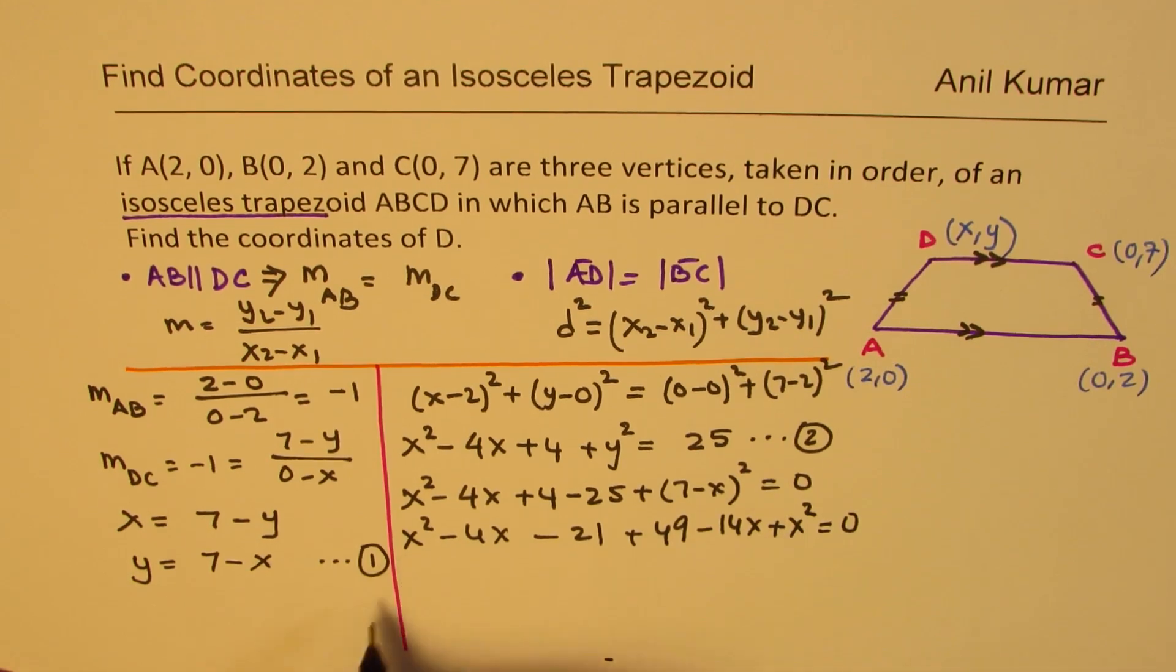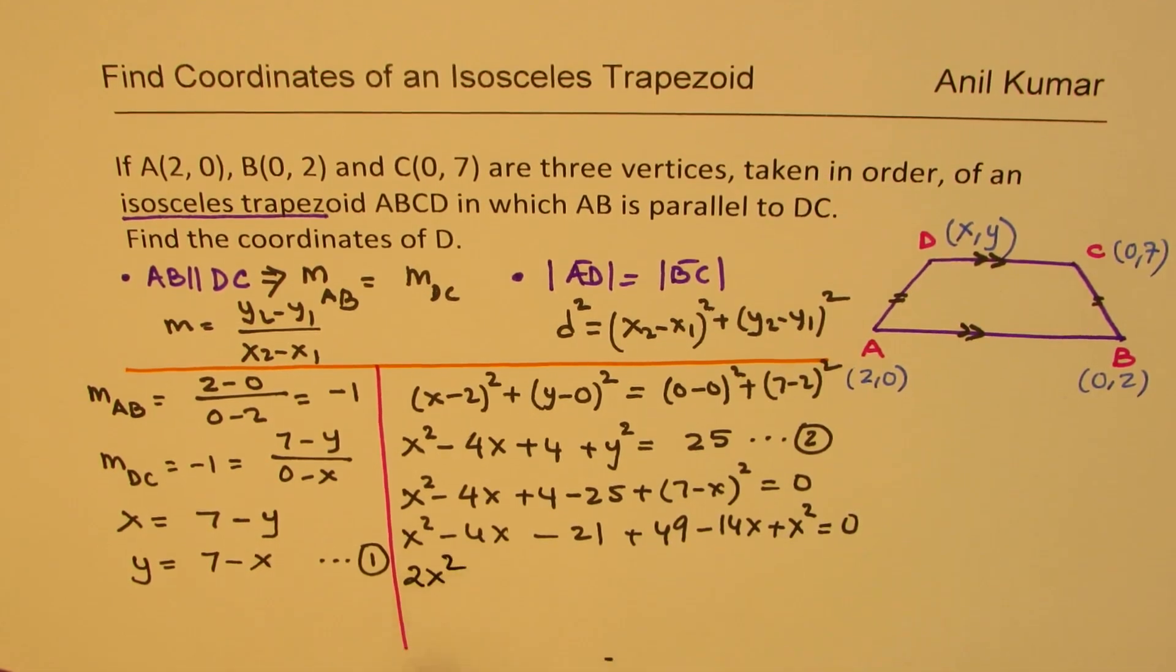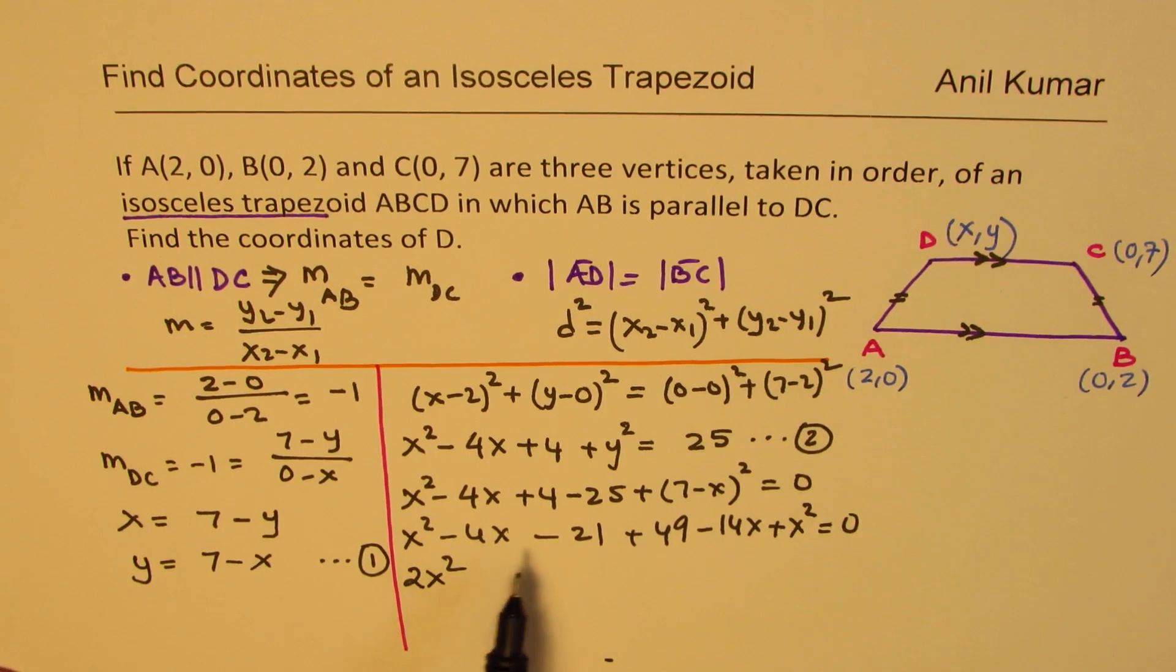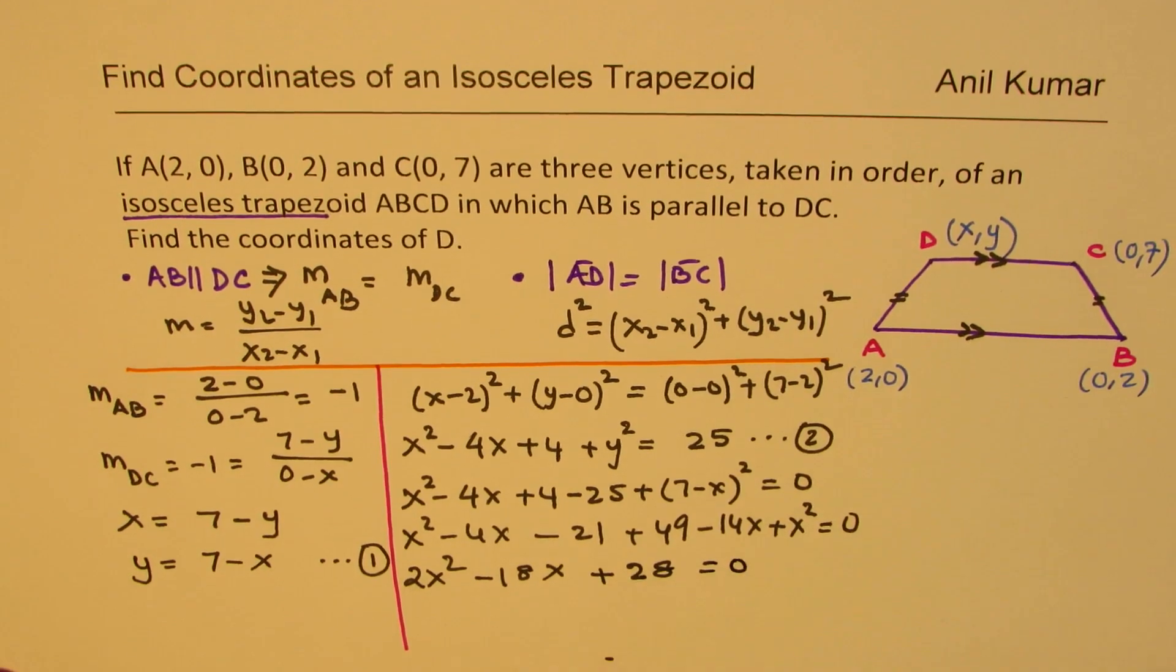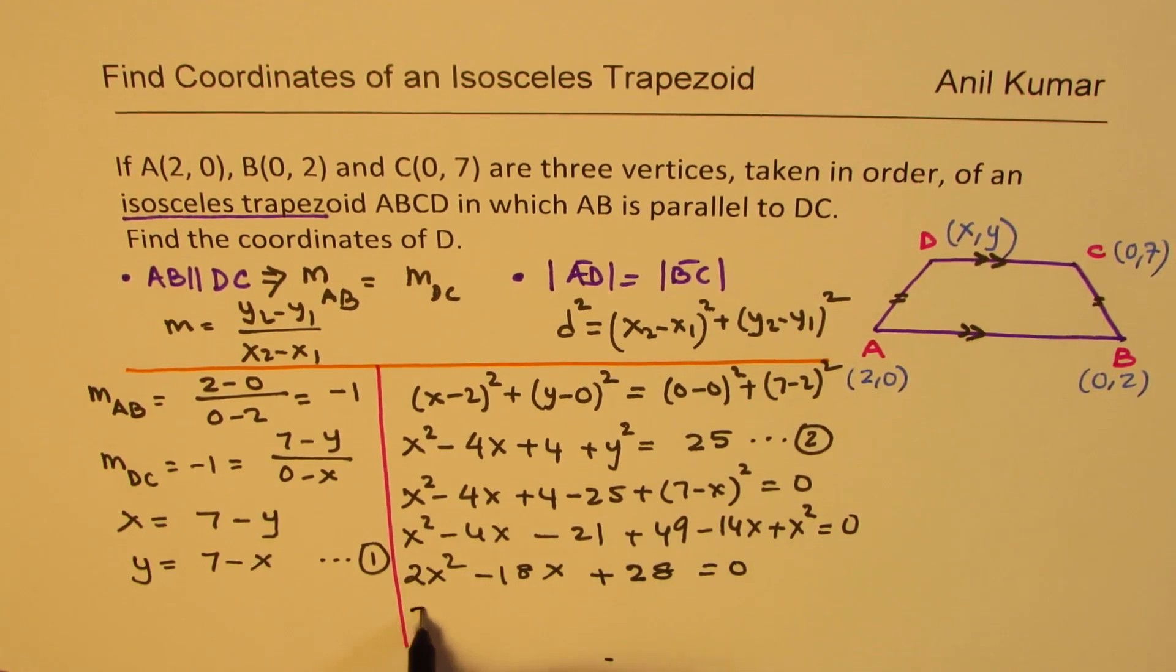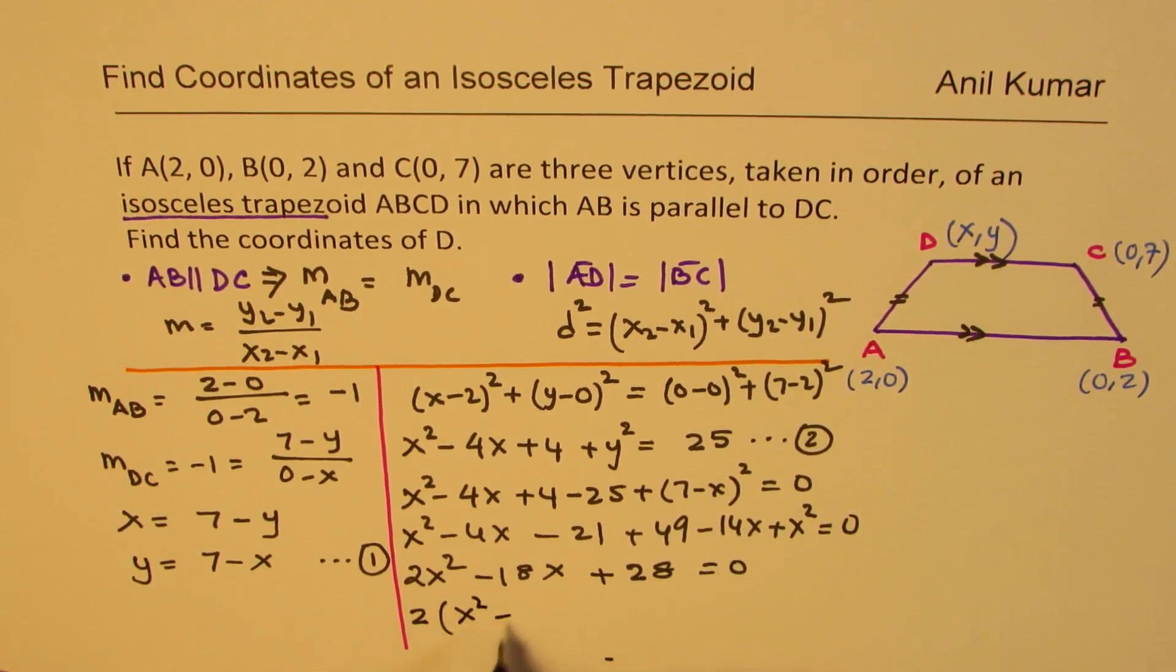Combining these two X, we get 2X². Then X values minus 4 and minus 14 means minus 18X. The constants taking away 21 from 49 gives us 28 equals to 0. We can now factor this. So we get X² minus half of this 9X, half of this 14 equals to 0.